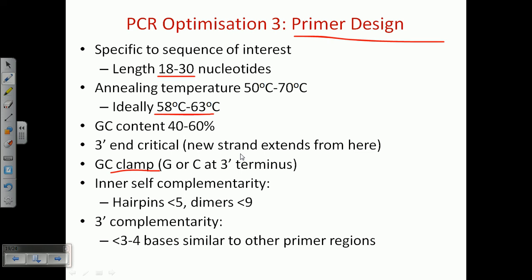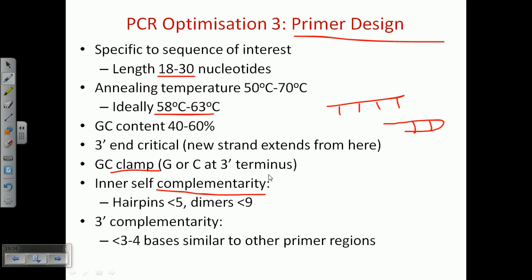The three prime end is very critical. The three prime terminal should be made up of GC content — a GC clamp is very important. We want a GC, CG, or any GNC nucleotide sequence at the three prime terminal because it ensures proper binding and proper initialization of the process. Self-complementarity must be minimal, because if the primer has self-complementarity it can form intrastrand bonds and create problems. Also, three to four bases similar to the other primer must not be present.